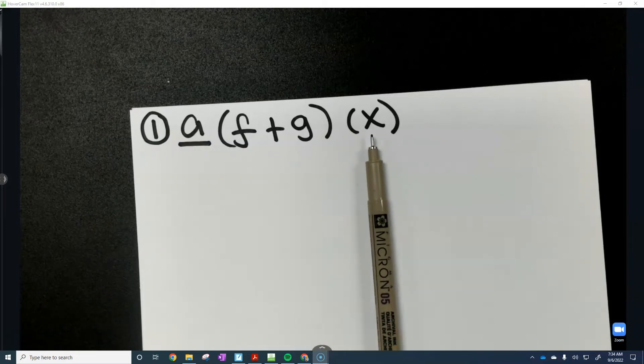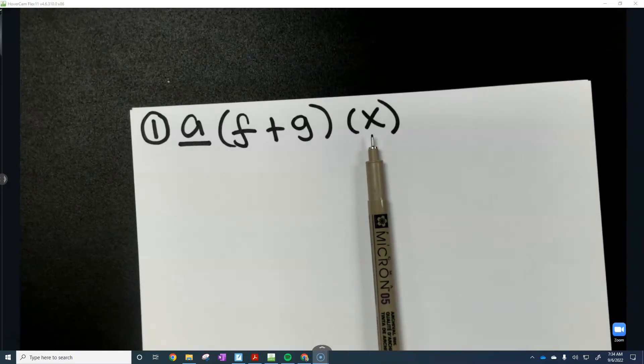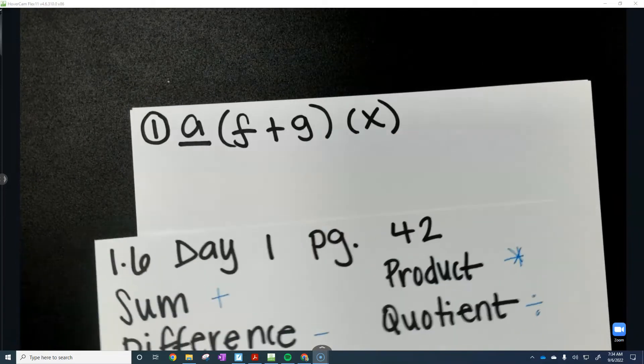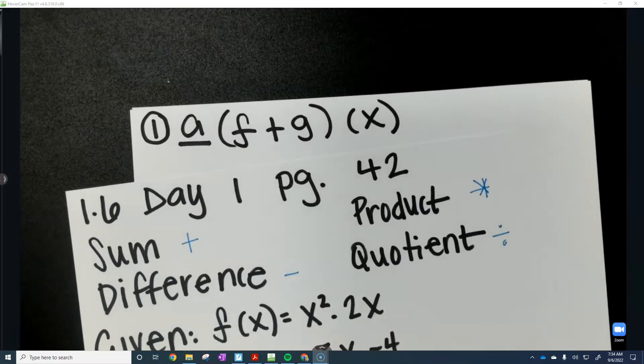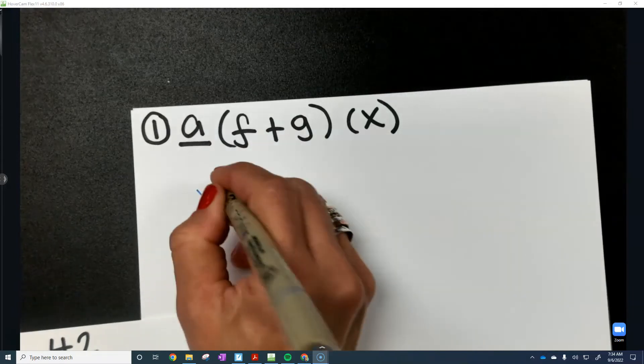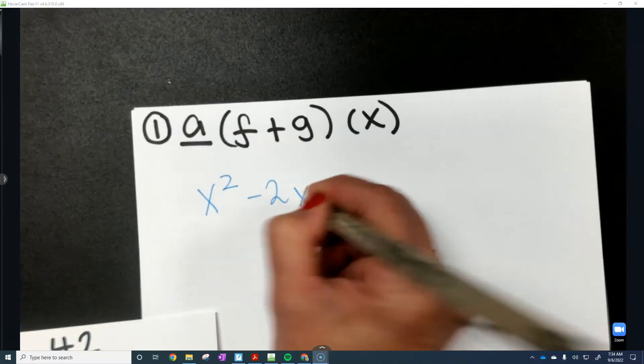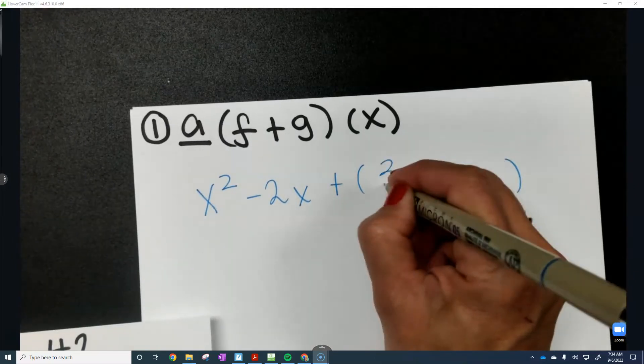Sometimes you'll have x there, which means we're going to leave it in terms of x, just combine like terms and leave it. Sometimes we'll have to evaluate with a binomial in here or even perhaps a number. So we're just going to be adding f and g. So it's just the composition of adding both of these together. So remember f is x squared minus 2x, and I'm going to write plus. And I'm going to put g of x in parentheses.